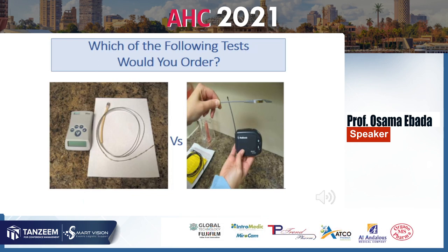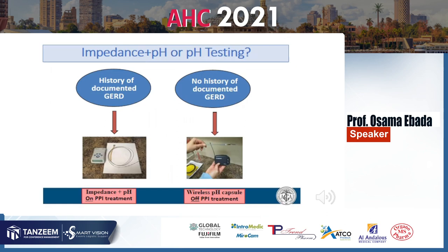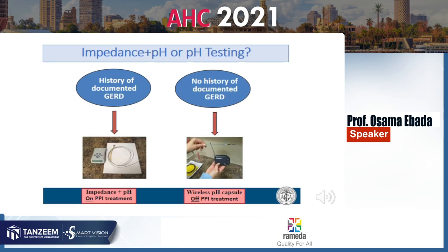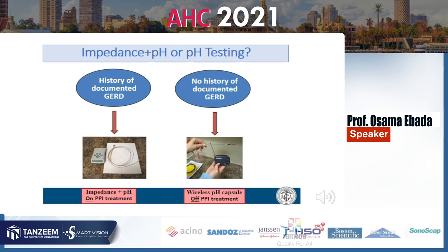Which test to use — impedance or pH — depends on whether the patient has a history of established GERD. If there is established GERD, you can use impedance on PPI. If GERD is not established, you use off-PPI pH or impedance.